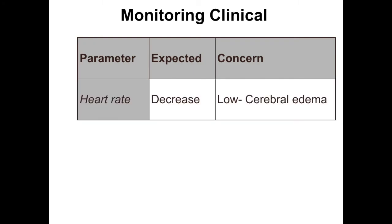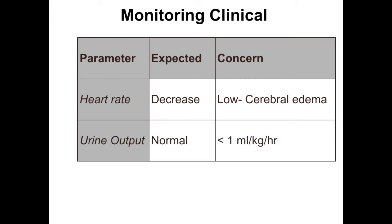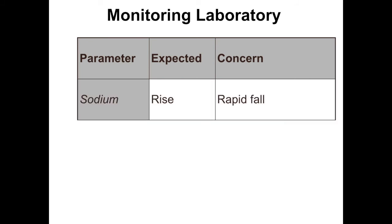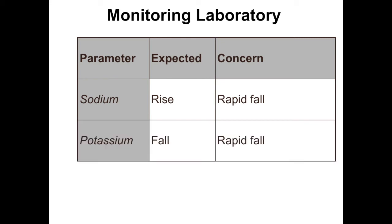Clinical monitoring is paramount — every doctor should assess the patient at least hourly. Heart rate should decrease with treatment; a significant drop may indicate cerebral edema. Urine output should be normal; oliguria may be the first marker of renal failure. Deteriorating sensorium suggests hypoglycemia or DKA-induced cerebral edema. For labs: corrected sodium should rise — a rapid fall is a risk factor for cerebral edema. Potassium is expected to fall with treatment; a rapid fall requires adding more potassium (up to 60 mmol/L) or reducing insulin dose.